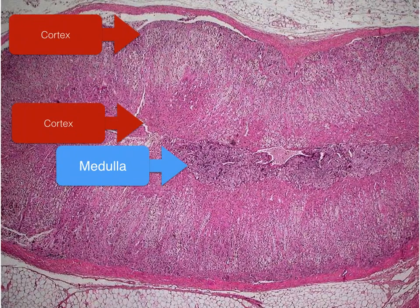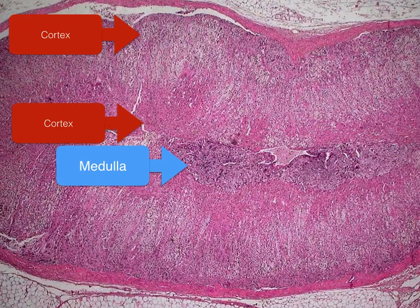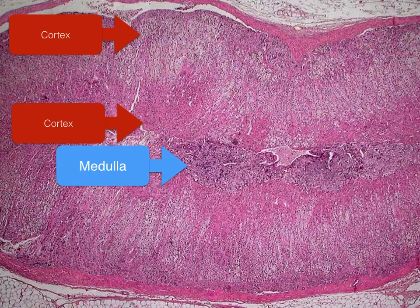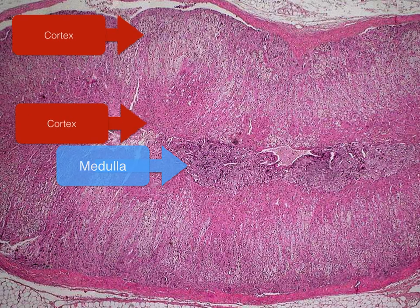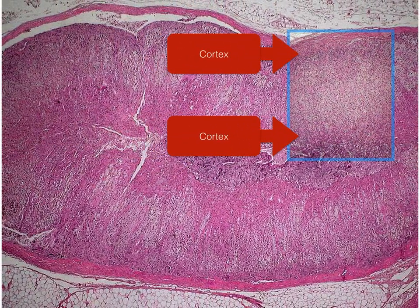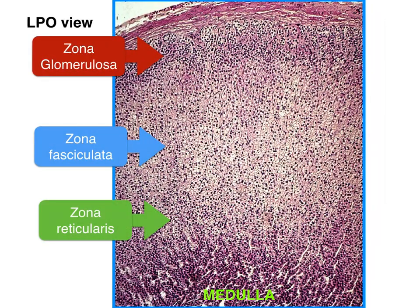At scanner view, we can see that the adrenal gland has two distinct parts: the cortex and the medulla, which differ in structure, function, and embryological origin. The adrenal cortex is organized into cords arranged radially around the medulla. The cortex is divided into three sub-layers: zona glomerulosa, zona fasciculata, and zona reticularis.